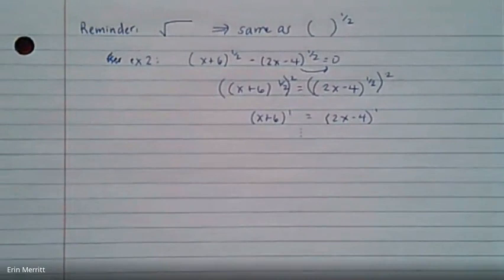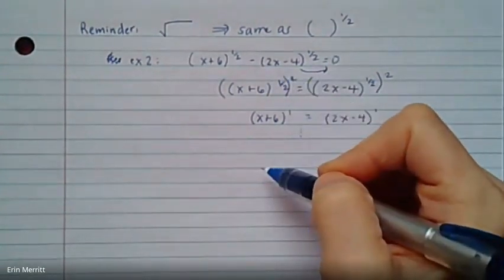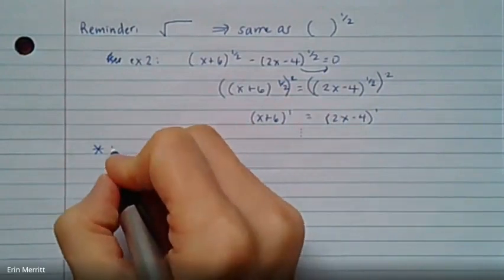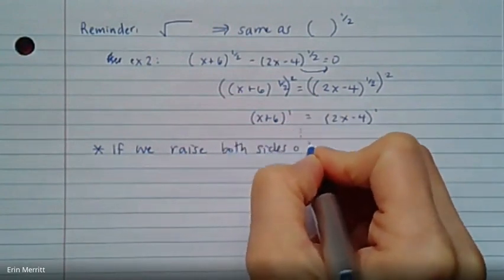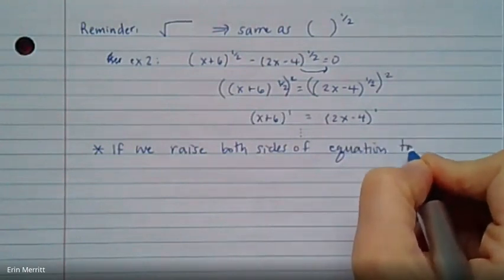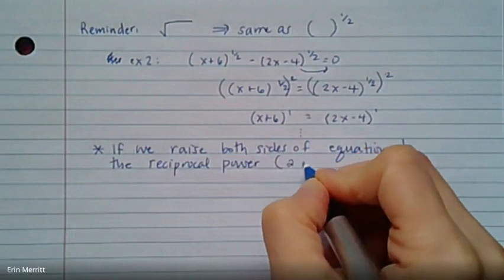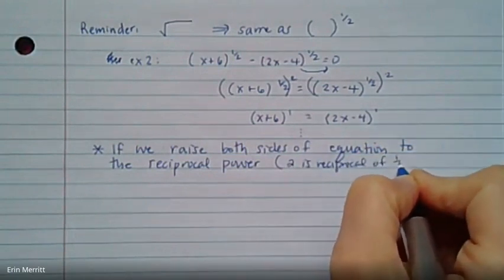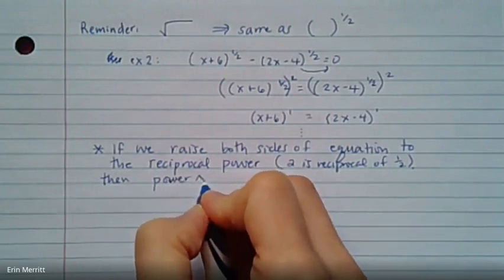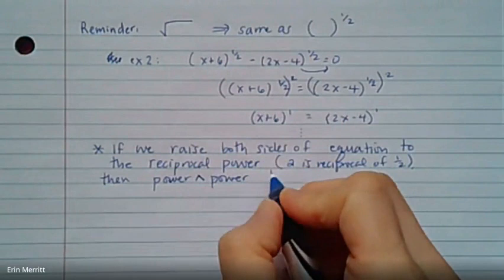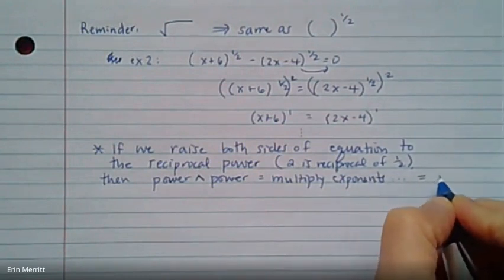The reason I bring that up is that it works because 1 half and 2 are reciprocals. When you multiply by the reciprocal, you get 1. So write yourself a big old note here that if we raise both sides of the equation to the reciprocal power, because 2 is the reciprocal of 1 half, then power raised to a power equals multiply the exponents, and you end up with an exponent of 1.